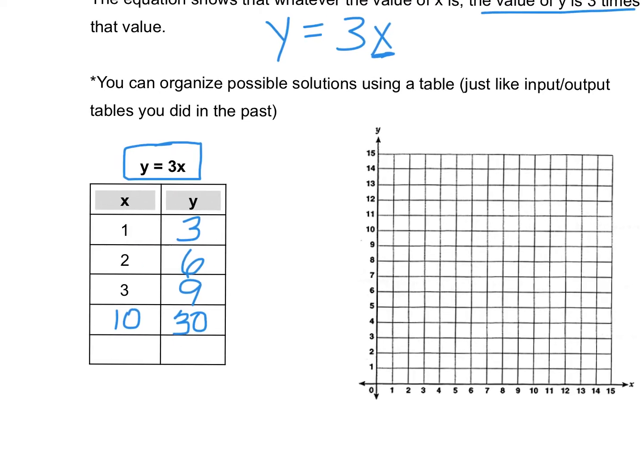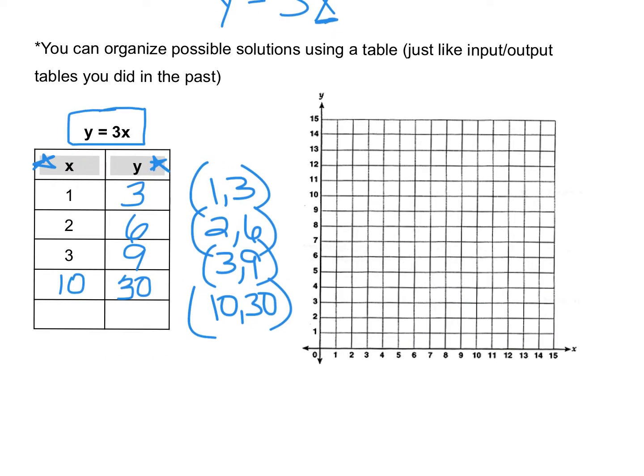Then we can take those values and write them as an ordered pair so we can graph our equation. Notice we've got an x and a y value. Whenever we graph points on the coordinate plane, we have to have an x coordinate and a y coordinate. We're going to use these numbers as the ordered pairs to put on our graph. See how I'm getting these ordered pairs? You can even go with 10, 30 here. As we've learned already this year, the x axis is the horizontal number line. The y axis is the vertical number line.